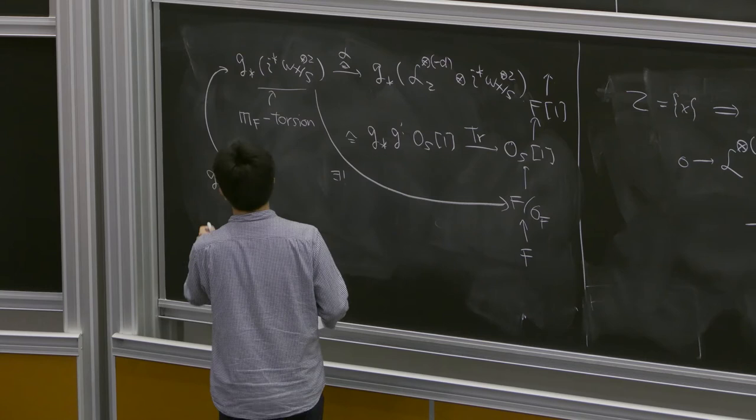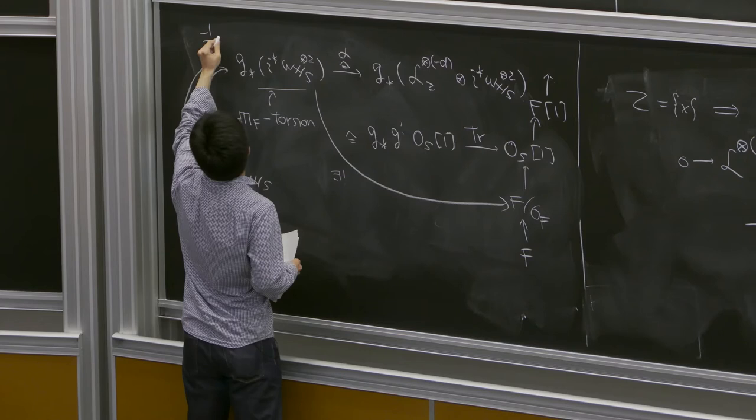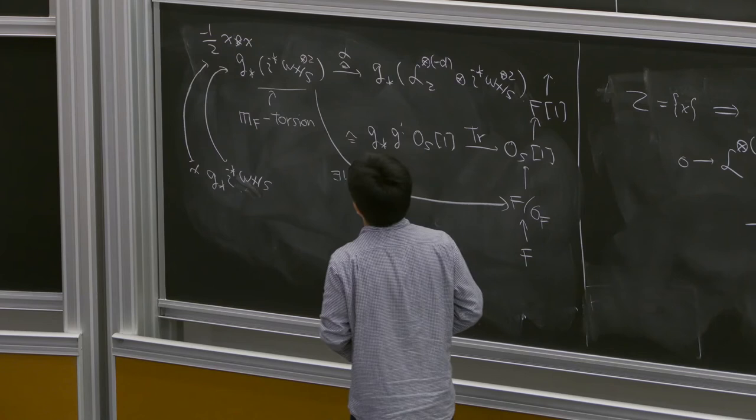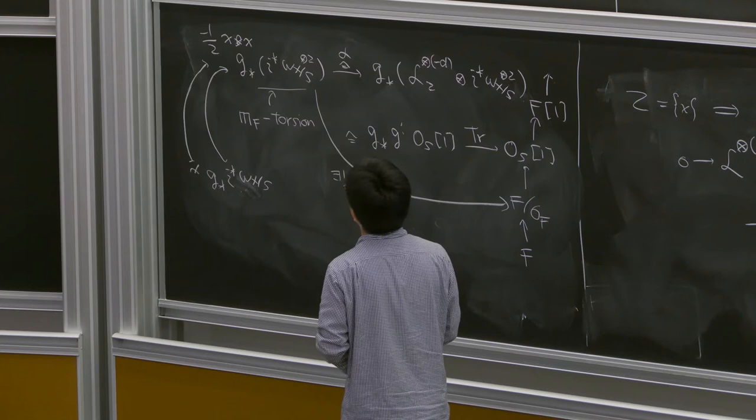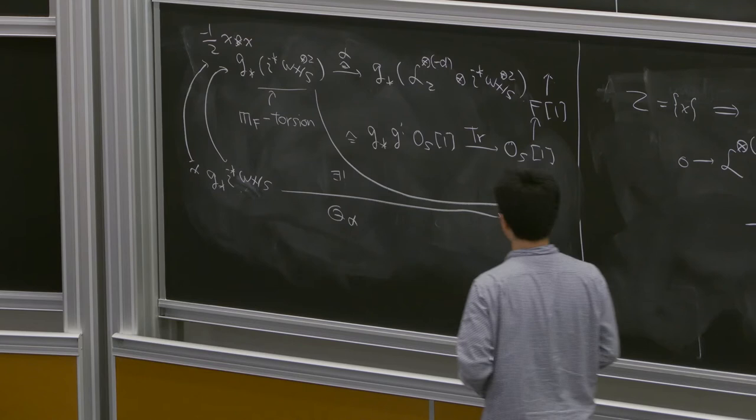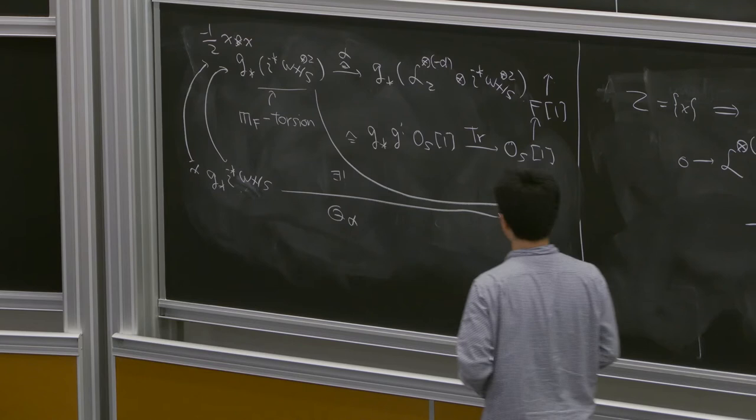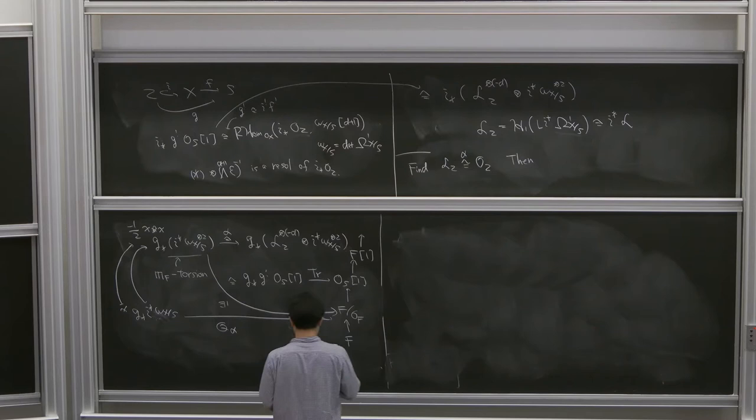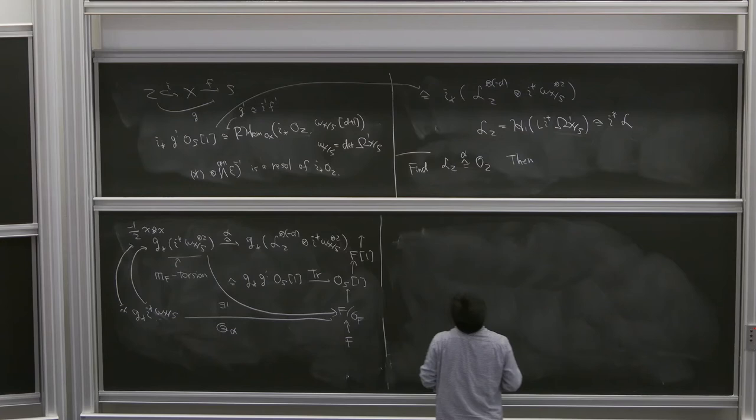Finally, I consider a map that sends x to minus 1 over 2 times the trace of x times x. So we need this factor. I don't know the reason why I need this one, but this is necessary to get a correct conjecture. And then I write Q alpha for this map, and this is a non-degenerate quadratic form.